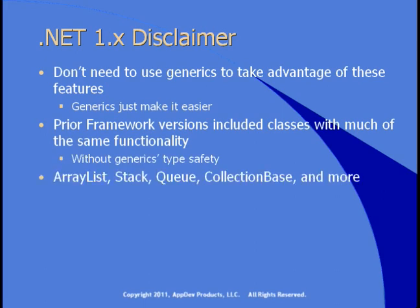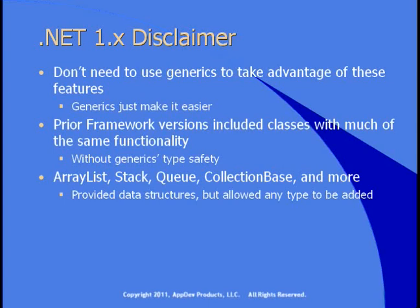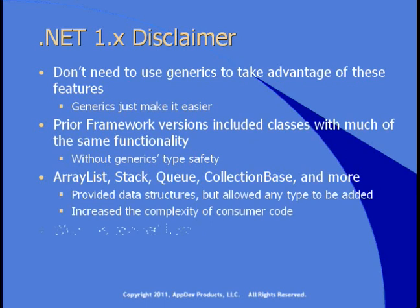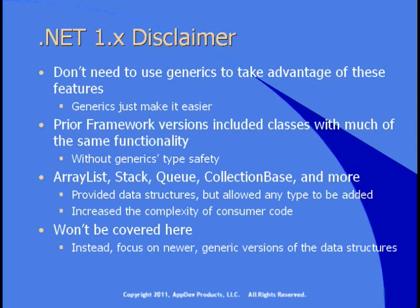The ArrayList, stack, queue, and other collection-based classes provided these data structures, but they allowed you to add any type. If you had an ArrayList, you could put anything in there — and when you attempted to retrieve the data, you never really knew what was in an ArrayList. This increased the complexity of consumer code. These won't be covered here — they're included in the framework only for legacy's sake.